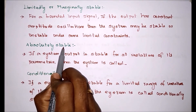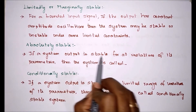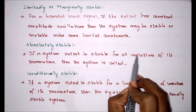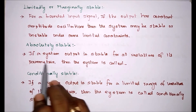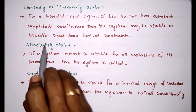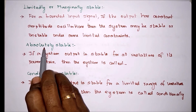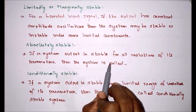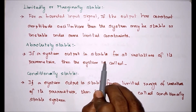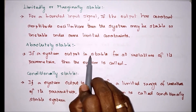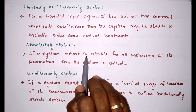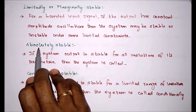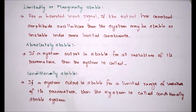The next one is absolutely stable. If the output is stable for all variations of its parameters, then the system is called absolutely stable. It means whatever may be the disturbance after the input, the output will not change. It will not allow any disturbance to vary the output. That is called absolutely stable.